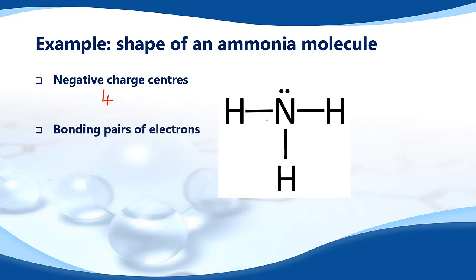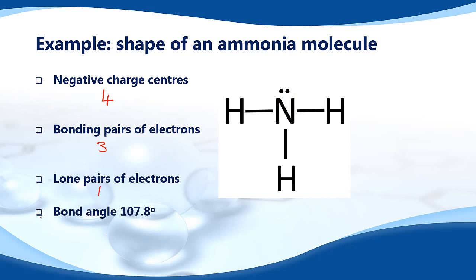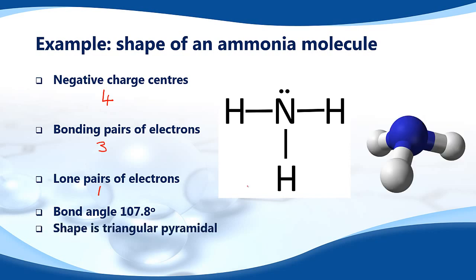Next we count the bonding pairs of electrons — a single covalent bond counts as one bonding pair, so that's three. Then we count the lone pairs around the central atom, which is nitrogen — there is one lone pair of electrons. So with four negative charge centers, three bonding pairs, and one lone pair, the bond angle is 107.8 degrees and the shape is triangular pyramidal.